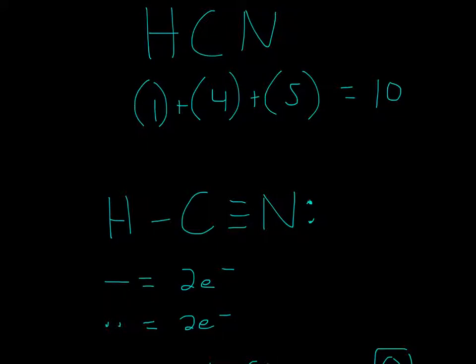As you can see, we have both. We have 0 formal charge, and we have 10 electrons. It's 2, 4, 6, 8, 10. So this is the correct Lewis structure, and then we can look closer at formal charge.